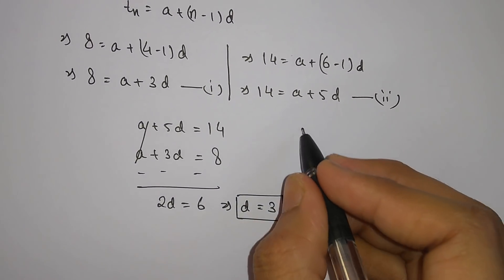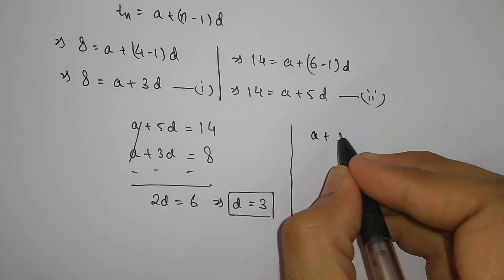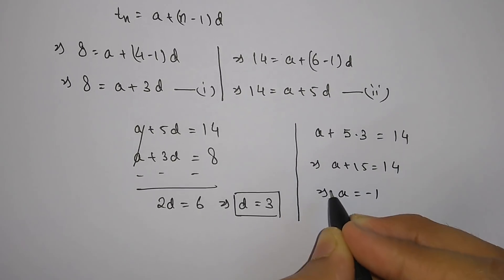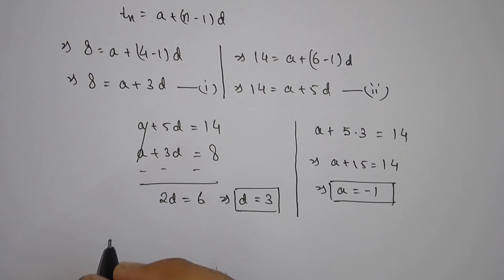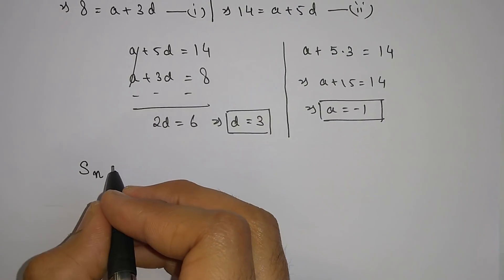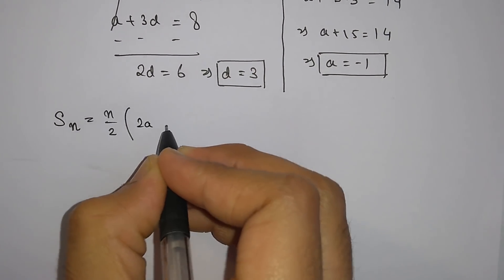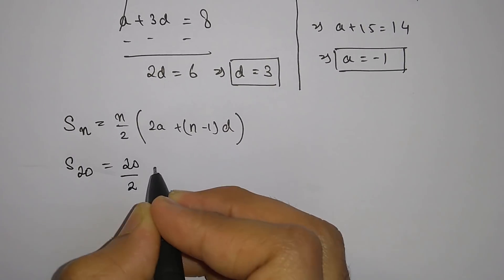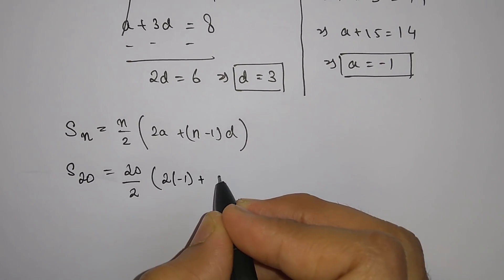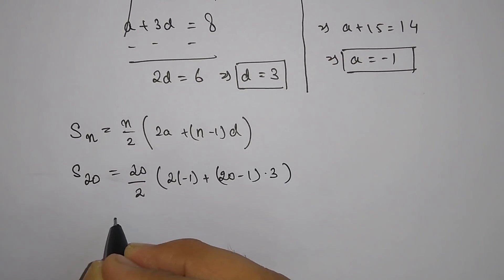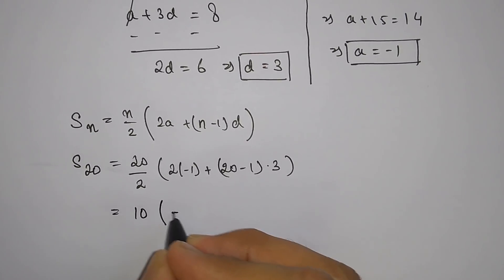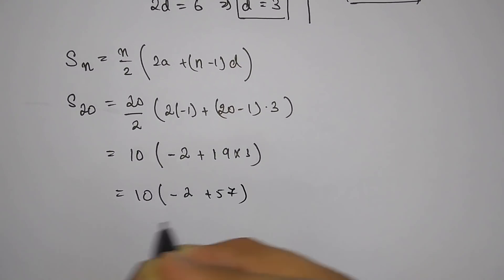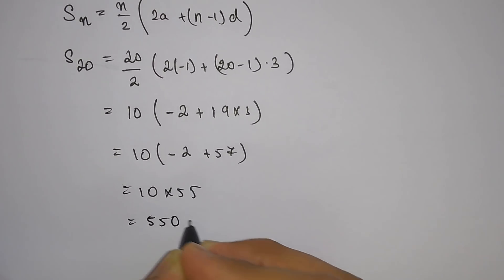Substituting d equals 3 into equation 2: a plus 15 equals 14, so a equals minus 1. The first term is minus 1 and common difference is 3. For the sum of the first 20 terms using Sn equals n/2 times (2a plus (n minus 1)d): S20 equals 20/2 times (2 times minus 1 plus 19 times 3), which equals 10 times (minus 2 plus 57), equals 10 times 55, equals 550.